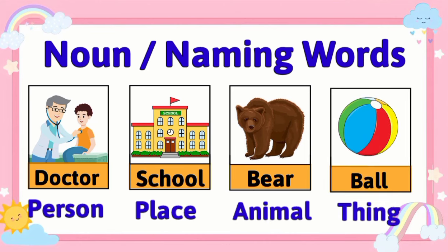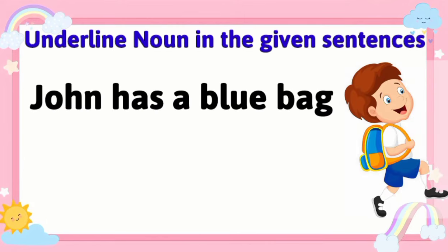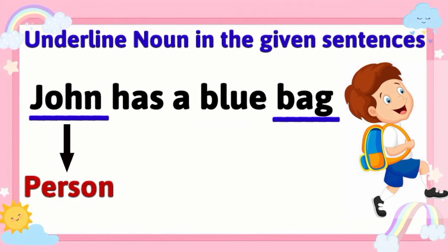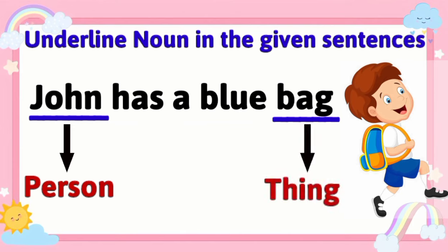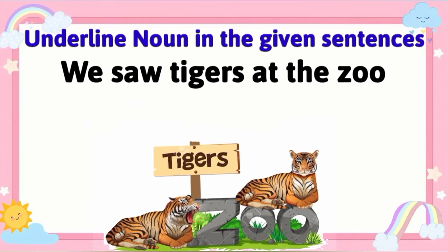Underline the nouns in the given sentences. 'John has a blue bag.' In this sentence, the words John and bag are both nouns — John is the name of a person and bag is the name of a thing. So John and bag are both nouns.